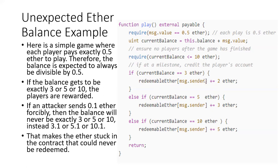If you're off by even a little bit, you'll never hit exactly three, five, or ten, and nobody gets paid. The game becomes stuck until someone else self-destructs a contract to send in enough Ether to make the balance a multiple of 0.5 again. And if the balance exceeds ten Ether, the require statement would fail and the contract could never pay out.